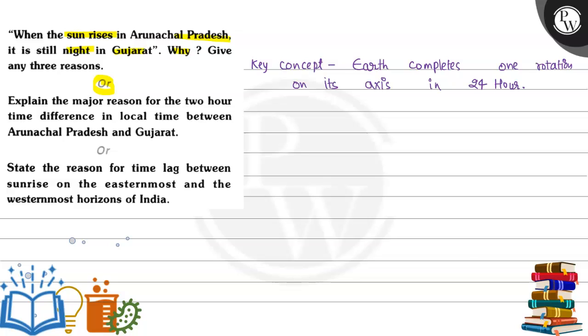For understanding, let's read this question. Explain the major reason for two hour time difference in local time of Arunachal Pradesh and Gujarat. The other question says state the reason for time lag between sunrise on the easternmost and the westernmost horizon of India. Easternmost is Arunachal, westernmost is Gujarat.